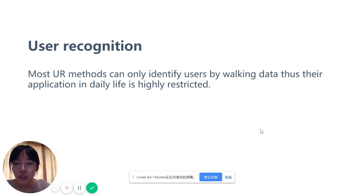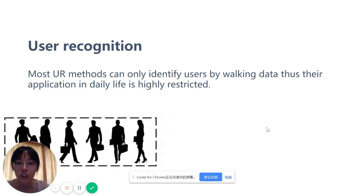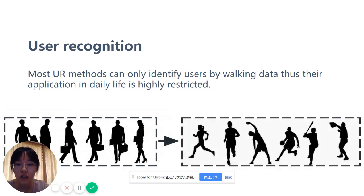Secondly, for user recognition, most methods can identify users only by walking data, which limits application in daily life. Extending user recognition from walking to other activities is valuable but also challenging, as there are significant differences between sensor data in different activities.